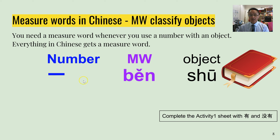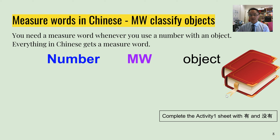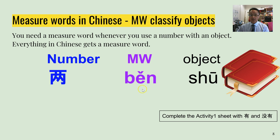Whenever you use a number, you need to use this structure when identifying or saying how many objects you have. For example, if we have two books, we still keep the number, measure word, object structure. But don't forget — when we use a measure word, 'two' in Chinese changes from 二 to 两. So: 两本书.